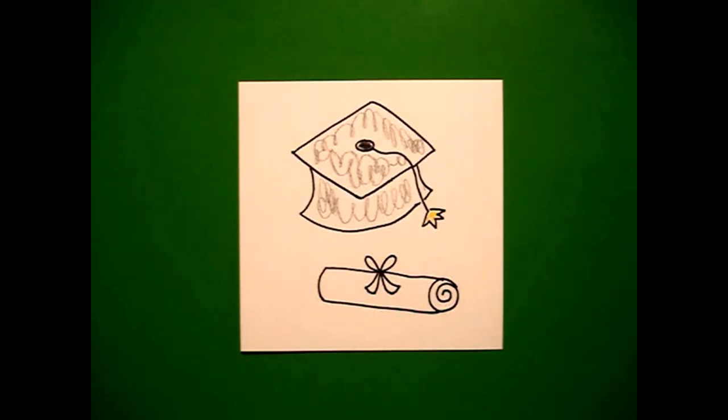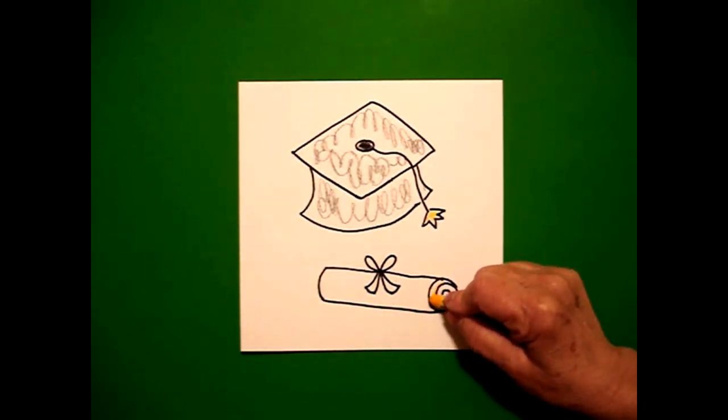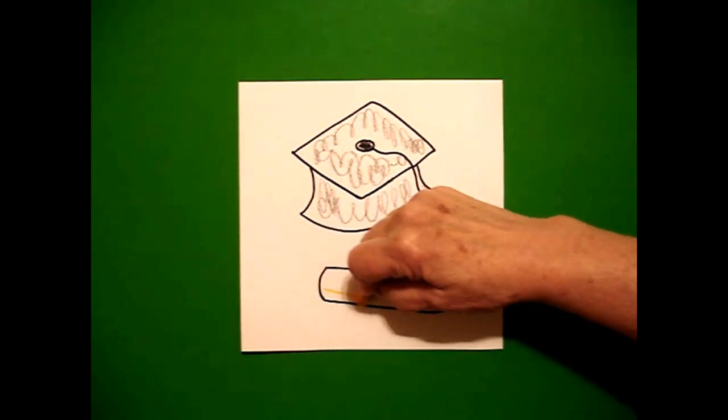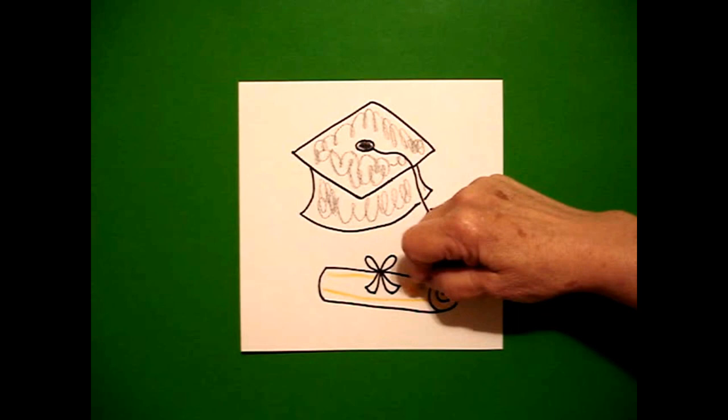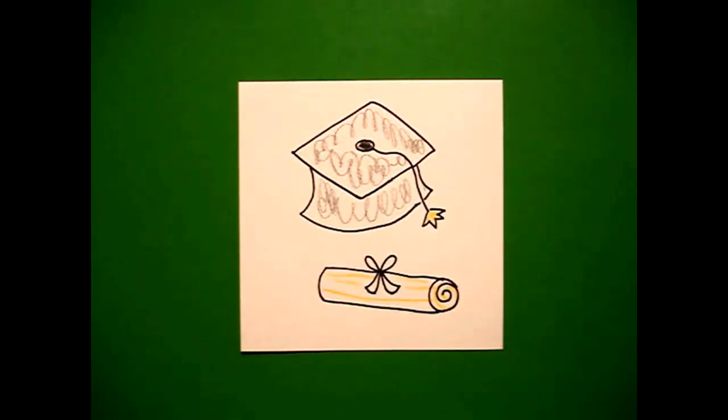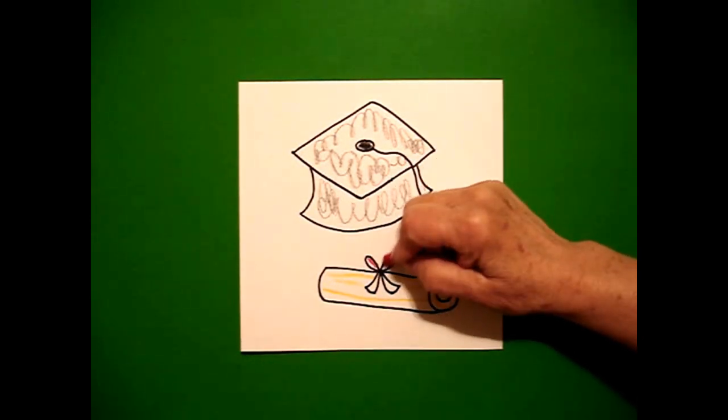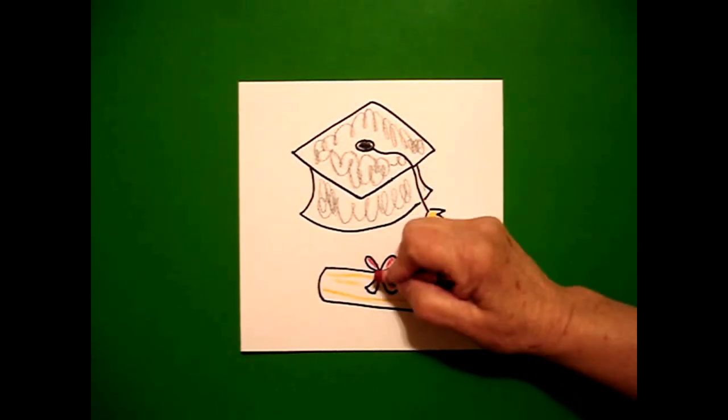Now for my diploma I'm going to take my yellow crayon again and I'm going to trace over my spiral and I'm going to add some straight lines going across just to give a pop of color. And then I'm going to take a red and I'm going to color in my ribbon.